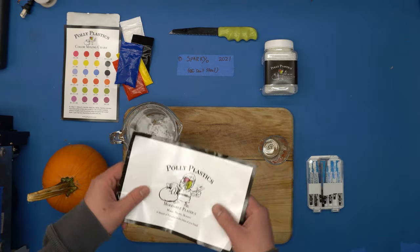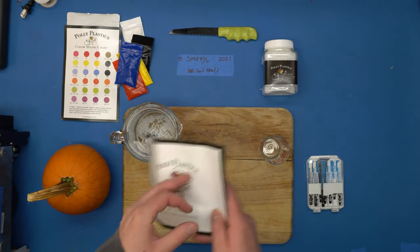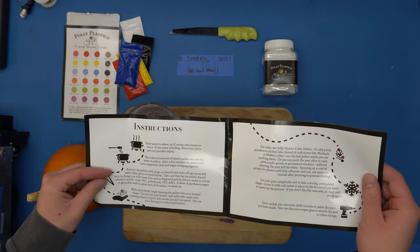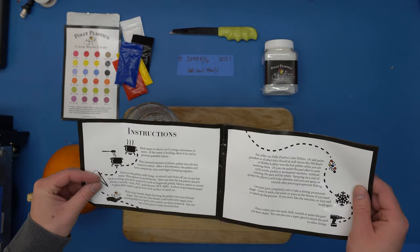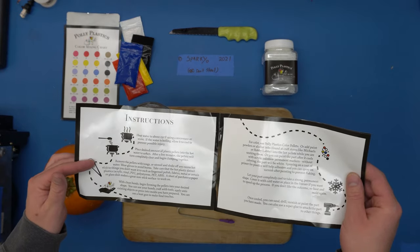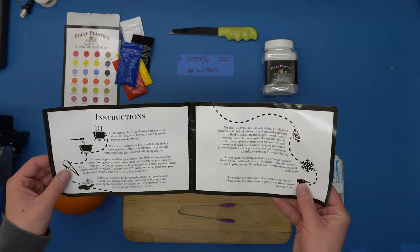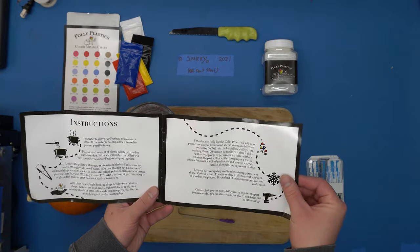This is the instruction booklet that came with the jug. I kind of wish the instructions were printed on it because who's going to keep a booklet like this? Basically, you heat it up with hot water or other methods like a heat gun. You pull it out and mold it by hand. It's not that complicated. For color, you can use the pellets they sell, paint, alcohol inks, or you can paint it after it's done.